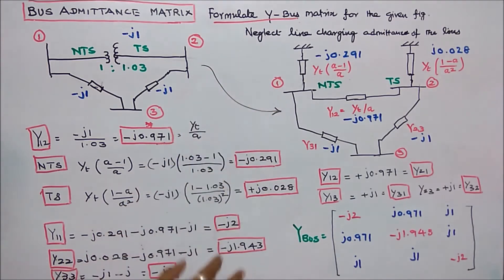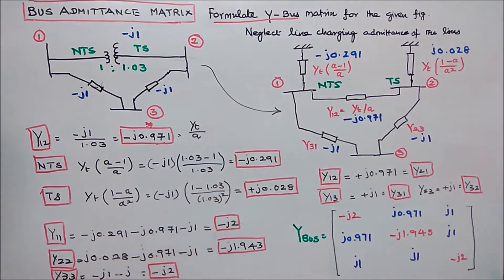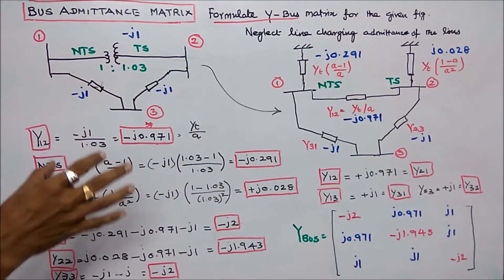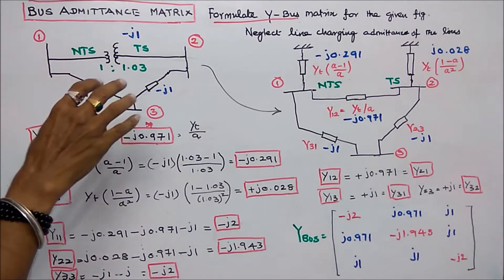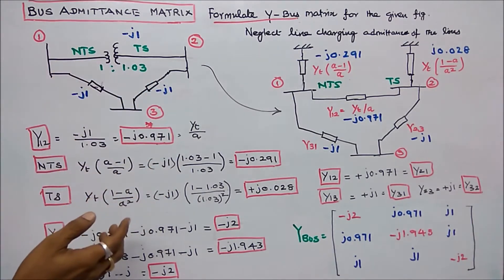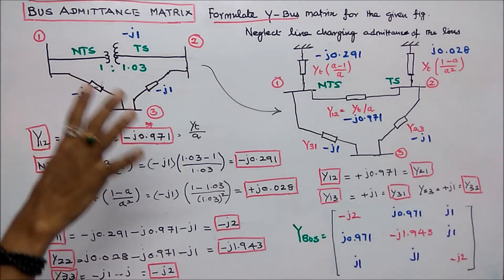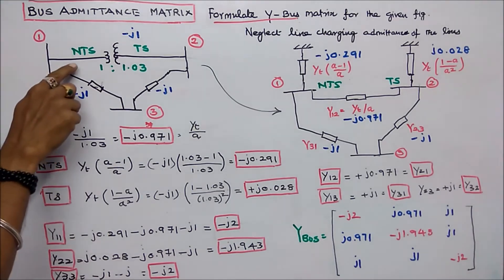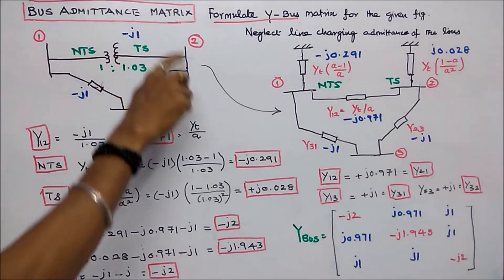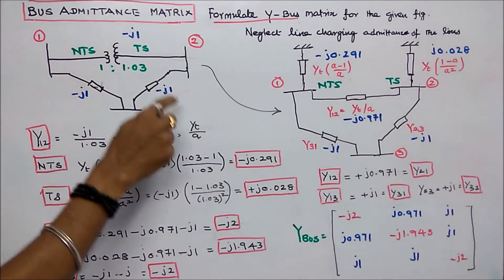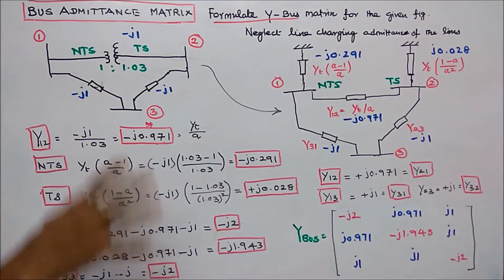In this class we will solve one problem: Formulate the Y-bus matrix for the given figure. This network consists of three lines and three buses, and one off-nominal tap-setting transformer connected between line 1 and 2, with a ratio of 1.03 to 1. This is the non-tap-setting side and this is the tap-setting side. The line admittances are minus J1, minus J1, minus J1. Neglect line charging admittance of the lines.